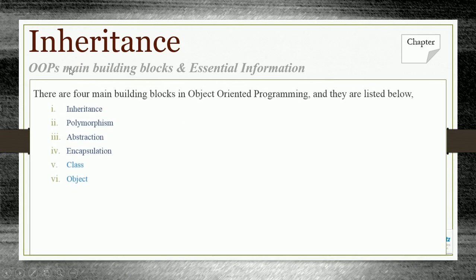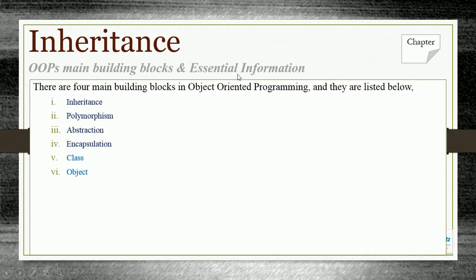The main OOP building blocks and essential information include: Inheritance, Polymorphism, Abstraction, and Encapsulation. This concept means you have to know about classes, objects, inheritance, polymorphism, abstraction, and encapsulation.